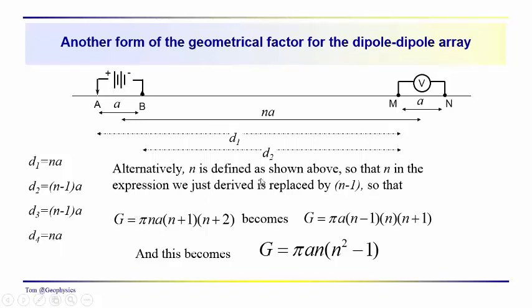Now, rather than go through all the messy algebra and use the basic definition for the geometrical factor, let's just realize that this n is basically n minus 1. So we're going to replace the n that we used previously with n minus 1, and that's going to give us pi a times n minus 1 times n minus 1 plus 1 is n times n minus 1 plus 2 is n plus 1, and you go through that multiplication, and you get the geometrical factor pi a n times n times n squared minus 1.